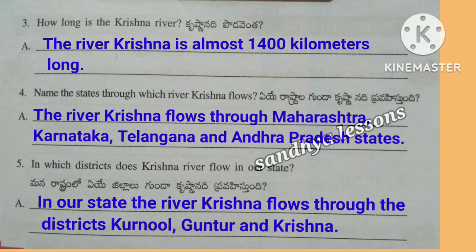Fourth question: Name the states through which river Krishna flows. The river Krishna flows through Maharashtra, Karnataka, Telangana, and Andhra Pradesh. Fifth question: In which districts does Krishna river flow in our state? In our state, the river Krishna flows through the districts Kurnool, Guntur, and Krishna.